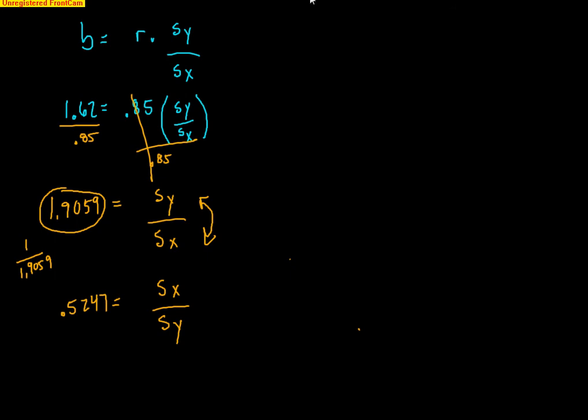Okay, now, let's try to go and find our new slope, right? Well, our new slope is going to be r times the standard deviation of x divided by the standard deviation of y. Why is this our new slope? Because we're switching the x and y, right?